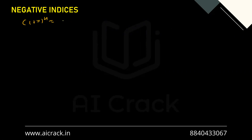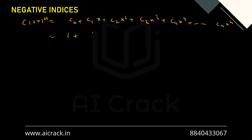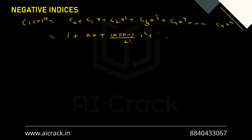I'll go back to (1+x)^n = C₀ + C₁x + C₂x² + C₃x³ + ... + Cₙxⁿ. Writing this in expanded factorial format: C₀ = 1, C₁ = nx, C₂ = n(n−1)/2! · x², C₃ = n(n−1)(n−2)/3! · x³, and so on. So I've written each nCr in its factorial form.